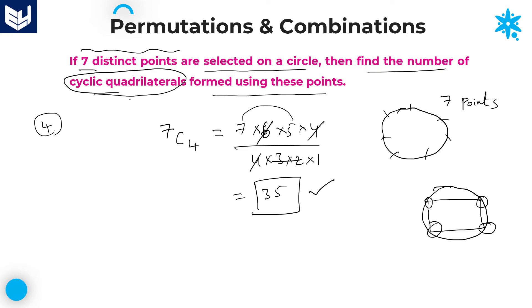For these kinds of problems, without knowing the exact meaning of cyclic quadrilateral, it is not at all possible to get the answer. That is why you have to be very careful in permutations and combinations — knowing where to apply permutation or combination is one point, and understanding the condition is the second point. If you know these two points, it is a very simple chapter compared to any other.